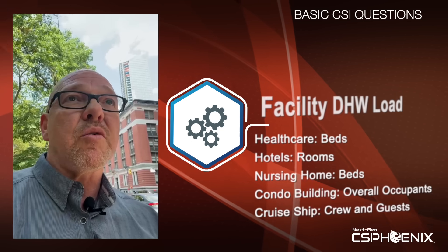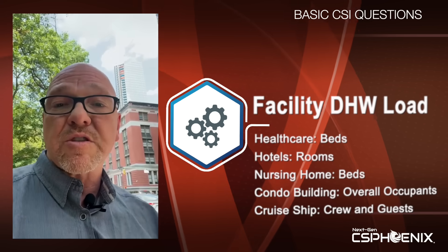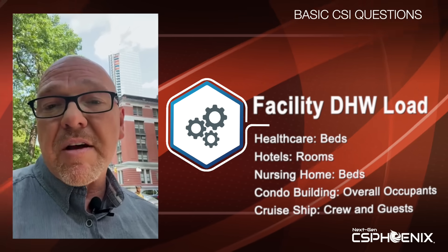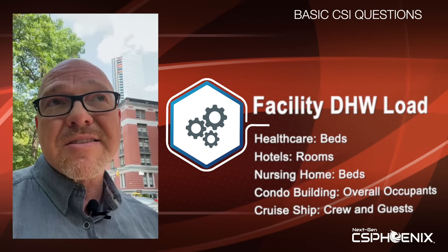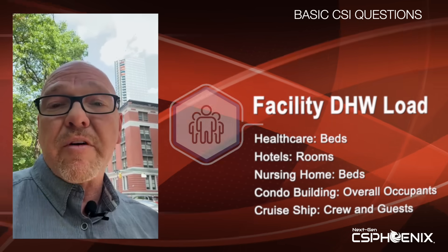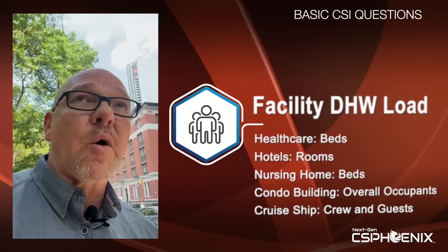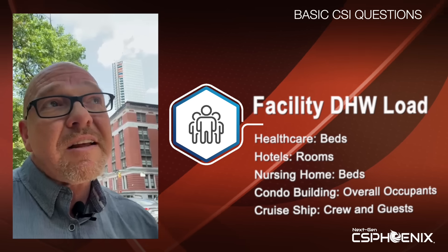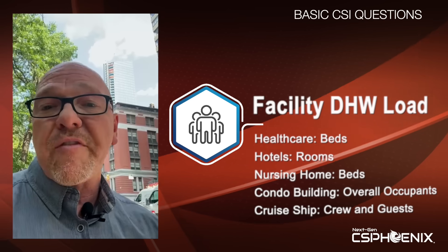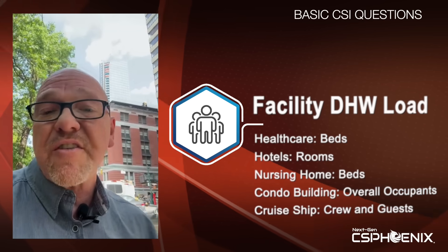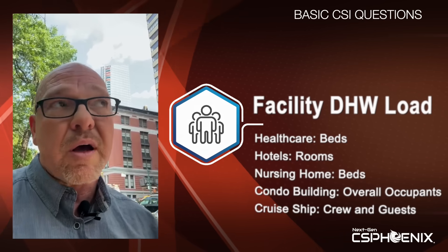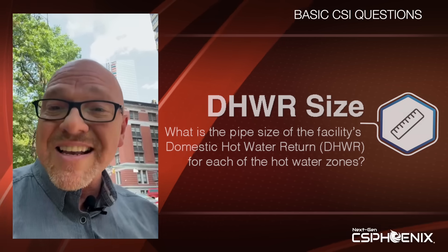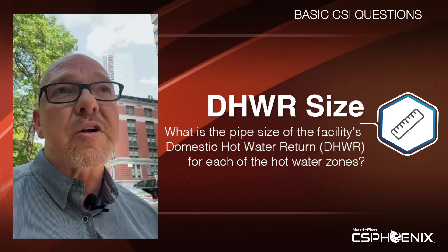Then we want to figure out how much water is being used by each zone. This is normally done by asking either the number of beds if it's a healthcare facility, the number of rooms if it's a hotel, or the number of facility occupants in general — for example, if it's a condo or a high-rise building. We also like to know the size of the hot water return line.